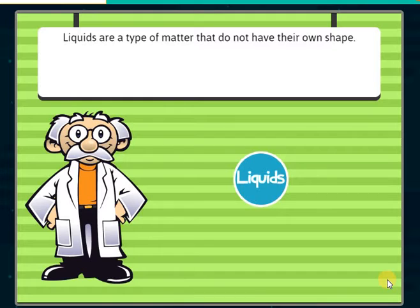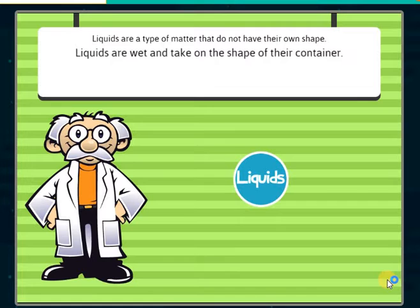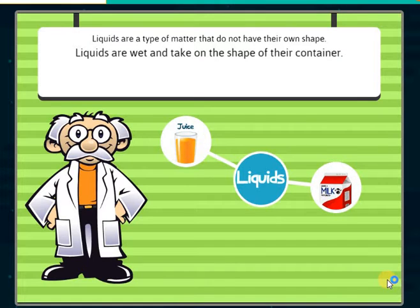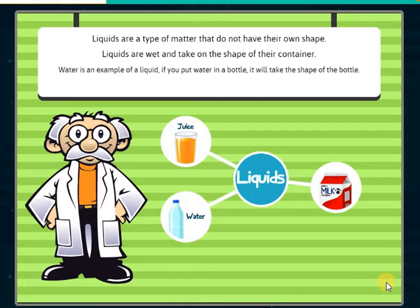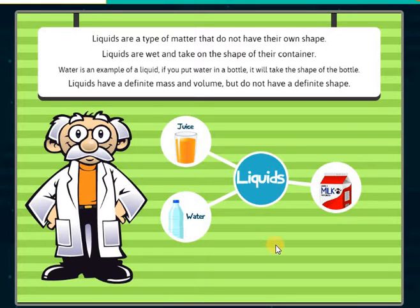Liquids are a type of matter that do not have their own shape. Liquids are wet and take on the shape of their container. Water is an example of a liquid. If you put water in a bottle, it will take the shape of the bottle. Liquids have a definite mass and volume, but do not have a definite shape.